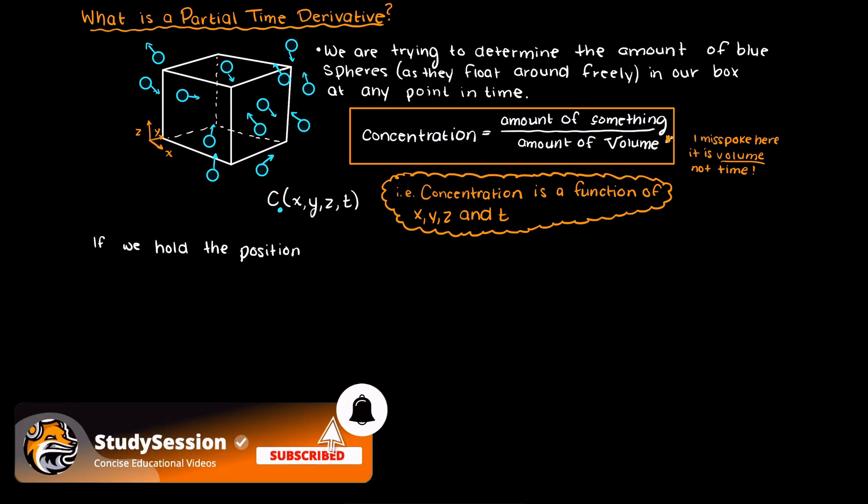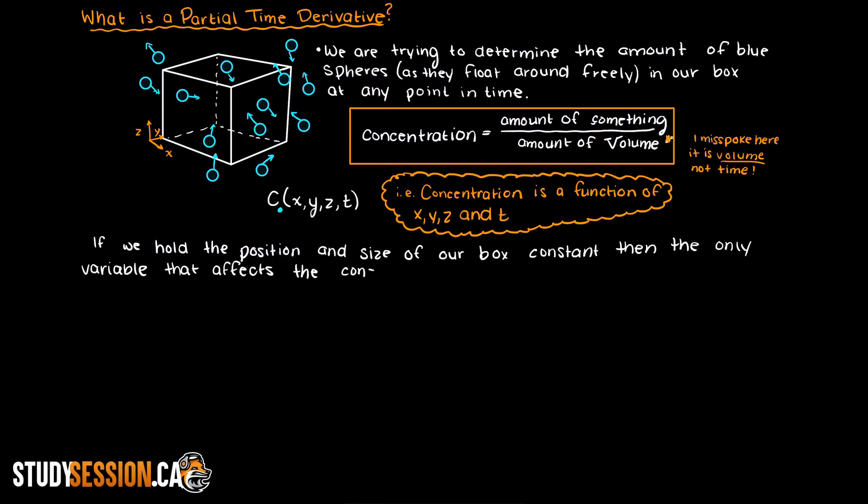One method is holding our box, that is our spatial coordinates, constant. This is going to be a partial time derivative, as we are observing the change in concentration over the change in time while holding all other variables constant.